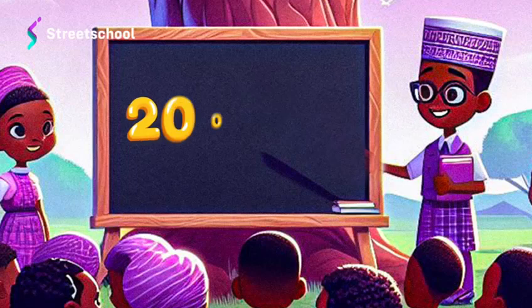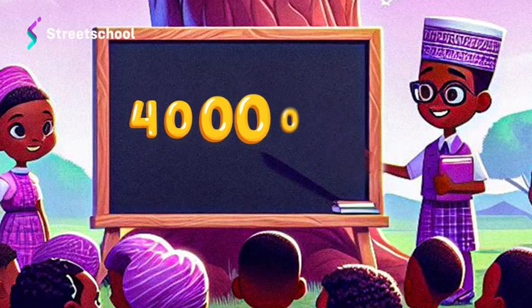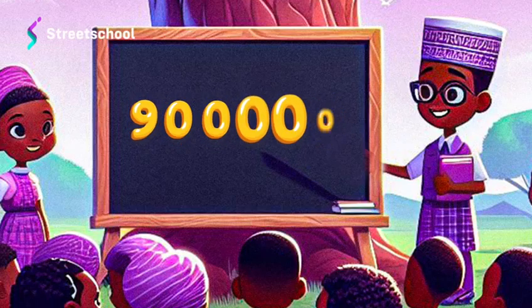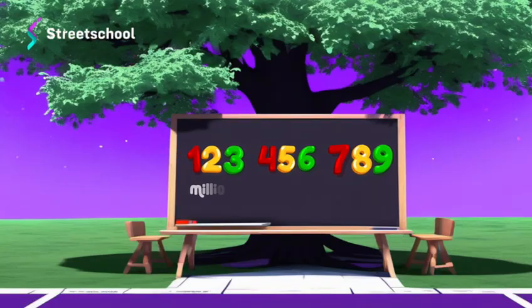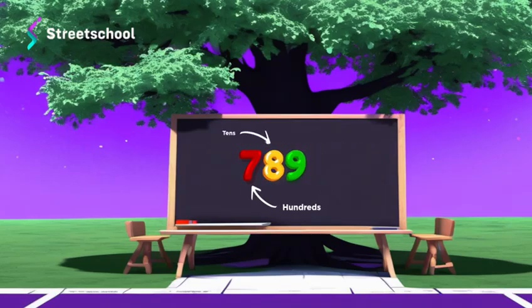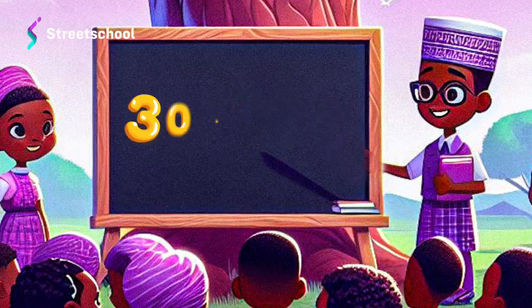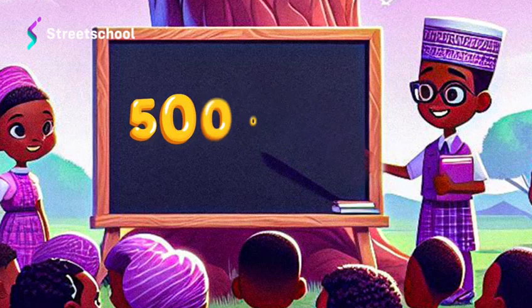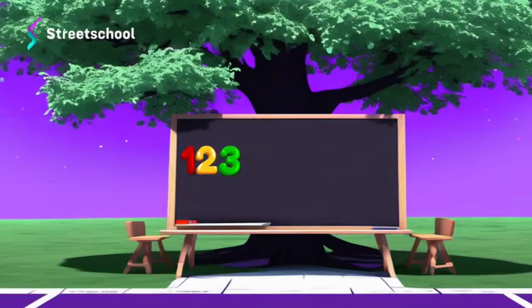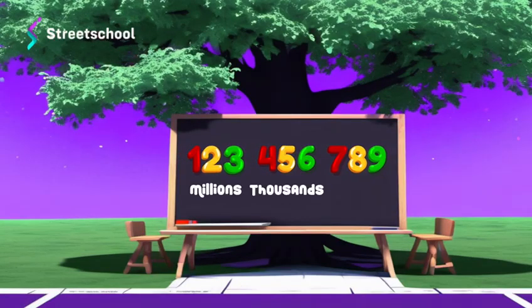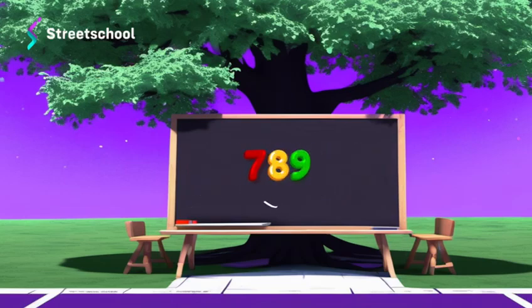As numbers get larger, we need more digits to represent them well. And each group contains three places: hundreds, tens, and ones.